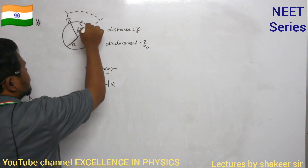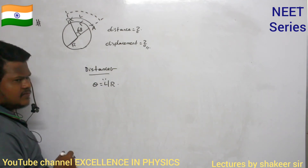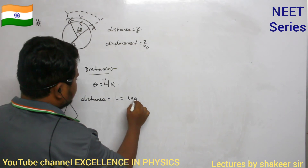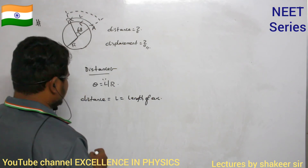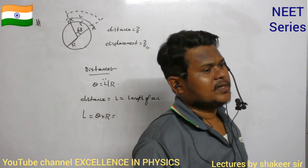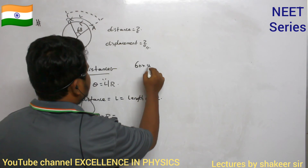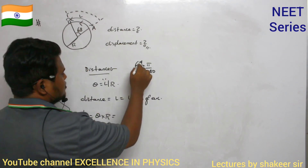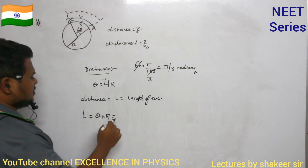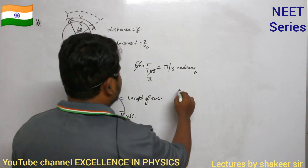The arc length l is the distance traveled. Converting 60° to radians: 60 × π/180 = π/3 radians. Therefore distance = (π/3) × r = πr/3.